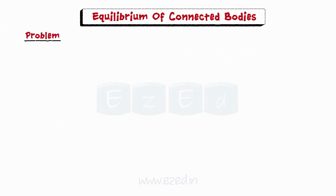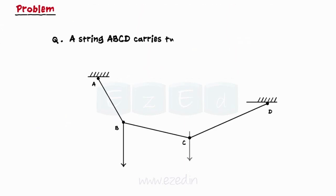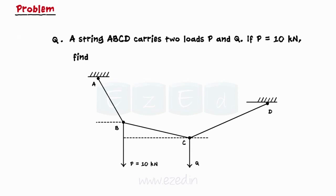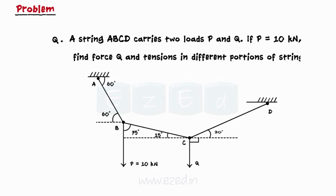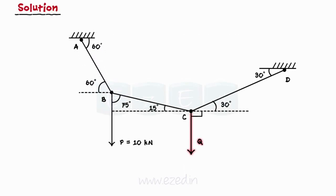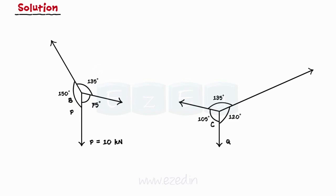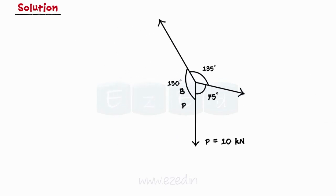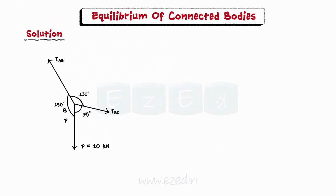Consider the following problem. A string ABCD carries two loads P and Q. If P equals 10 kN, find force Q and tensions in different portions of the string. We will isolate the joints and analyze them separately to find the tensions. We will first isolate joint B of the string. Let TAB and TBC be the tensions in string portions AB and BC respectively. This is a system of three coplanar, concurrent, and non-collinear forces, so we can use Lamy's theorem to find the magnitudes of the unknown forces.